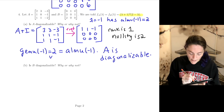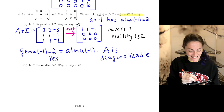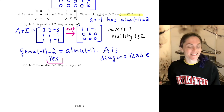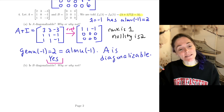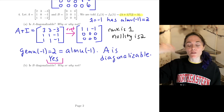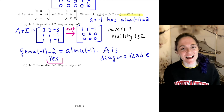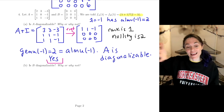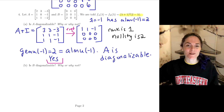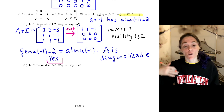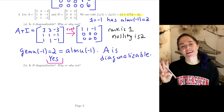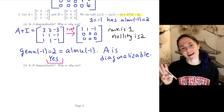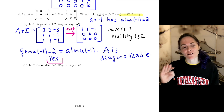So yes — A is diagonalizable, because for the repeated eigenvalue lambda equals minus 1, the algebraic and geometric multiplicities match. In total, we will have three linearly independent eigenvectors for matrix A.